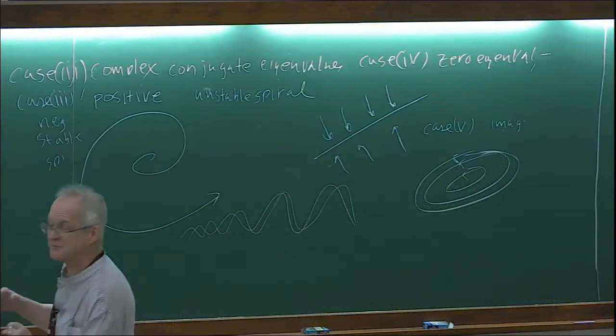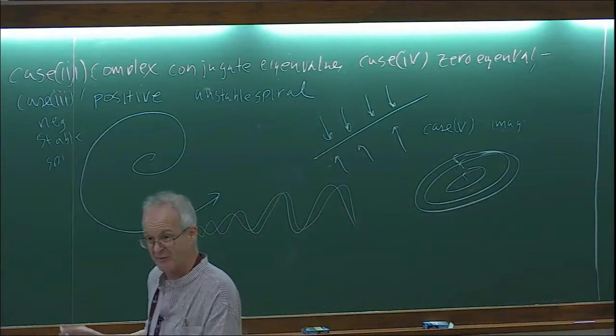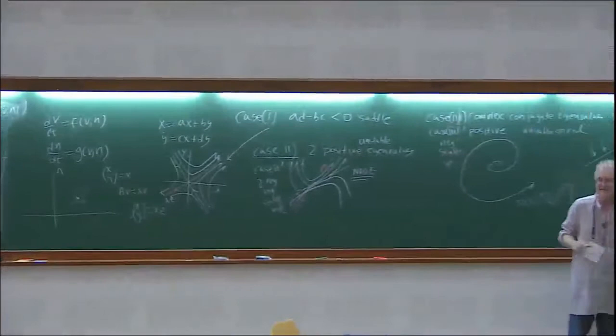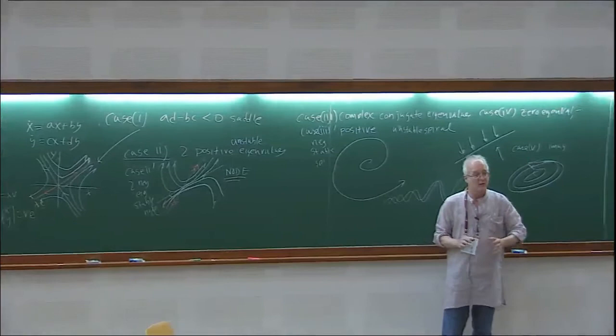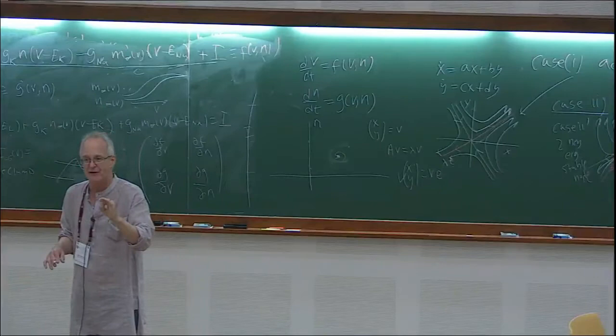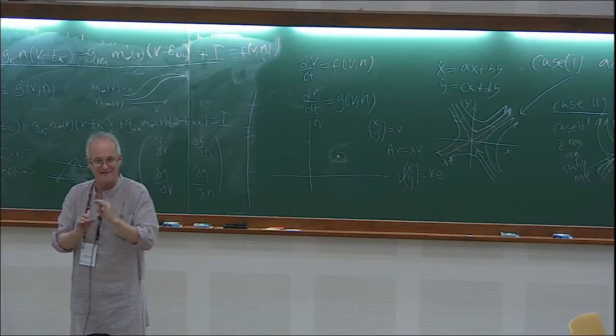We're going to do phase planes in a second using nullclines and direction fields — that'll help us determine the behavior. This is what the phase plane looks like for a linear system. But what about a nonlinear system? Near an equilibrium point, there's a theorem that says the behavior near an equilibrium point is the same as the behavior of the corresponding linear system, as long as the eigenvalues don't have zero real parts.